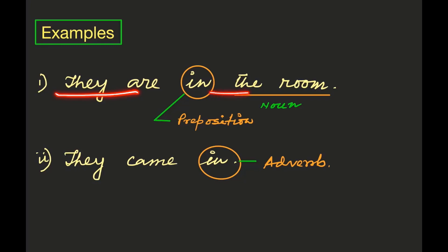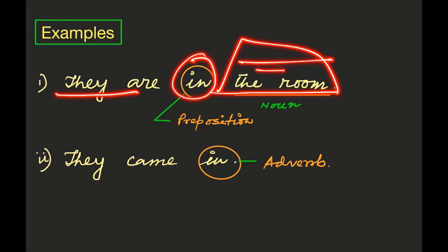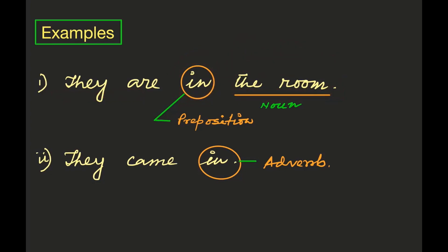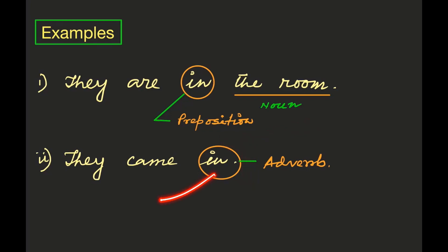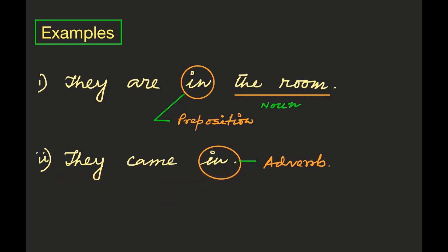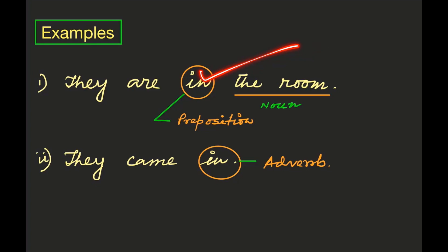See the first example: 'They are in the room.' Here 'in' is used before the noun 'room' to connect it with the rest of the sentence, so 'in' is a preposition. But see the second example: 'They came in.' After 'in' there is no noun or pronoun, so it is not a preposition — it just indicates a place or position. 'They came in' means they came inside, so here 'in' is an adverb. The same word can be used as a preposition or as an adverb.